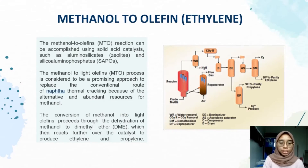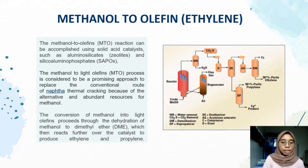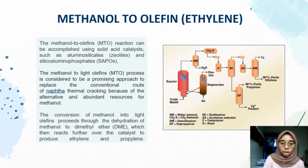The next part covers the methanol to olefin process, producing ethylene. The methanol to olefin reaction can be accomplished using solid acid catalysts, which are zeolite and SAPO. The methanol to light olefin process is considered a promising approach to replace the conventional route of naphtha thermal cracking, due to alternative and abundant resources for methanol. The conversion of methanol into light olefins proceeds via dehydration of methanol to dimethyl ether, which then reacts further over the catalyst to produce ethylene and propylene.